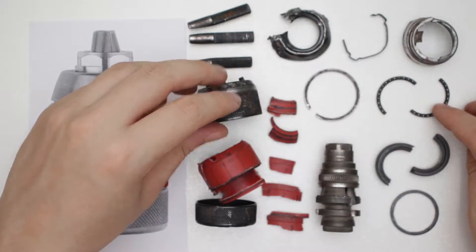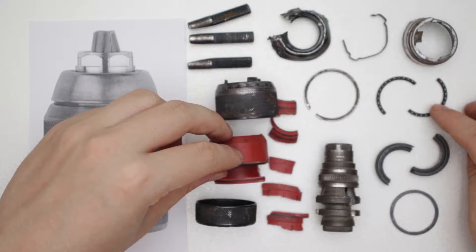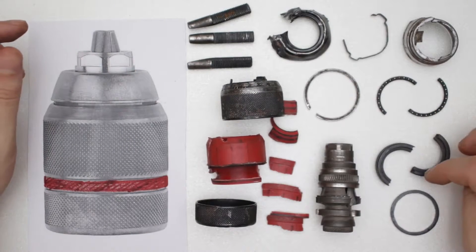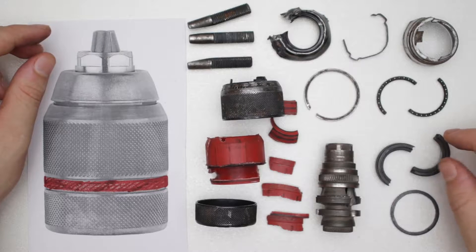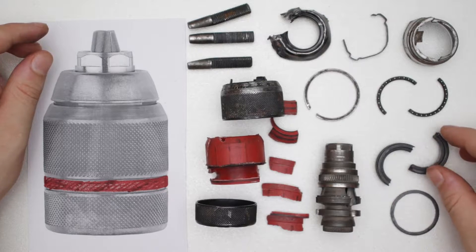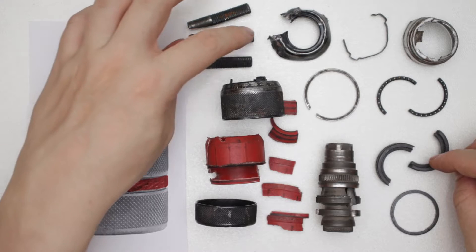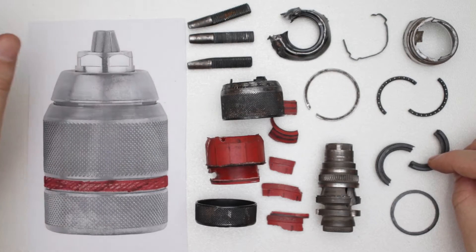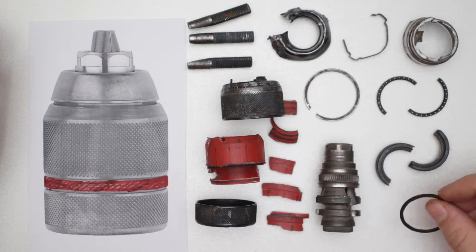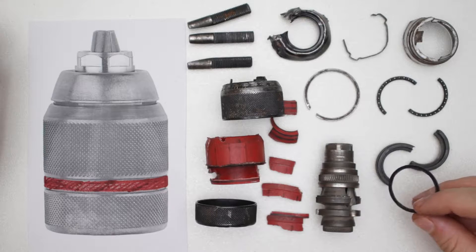This is a small bearing that keeps the nut from having too much friction, and this is the nut, which engages with these threads and moves the jaws. And this is the lower surface for the bearing.